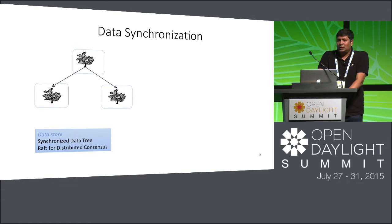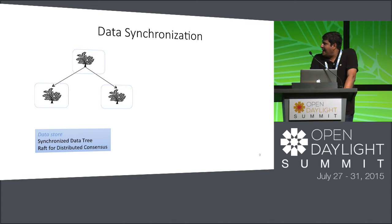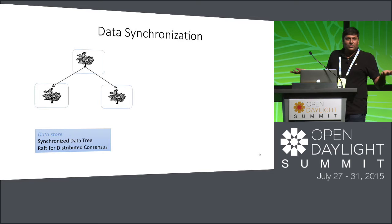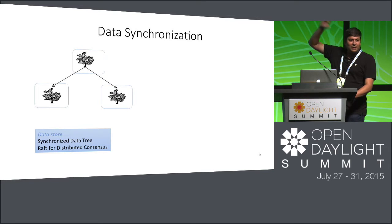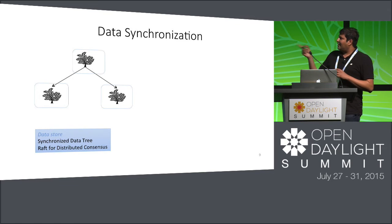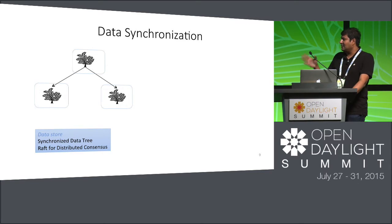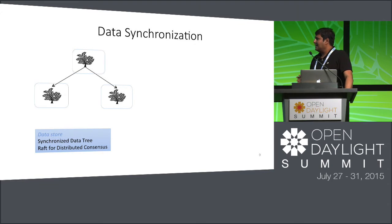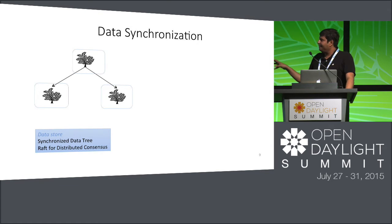Something common between the two implementations is data synchronization. For the data store, you have a big tree of data — inventory, topology, toaster, and so on — and you want that tree to be synchronized for high availability. We use an algorithm called Raft for consensus to make sure that all these trees look the same on each node. For RPC, we synchronize the RPC registry. That registry is replicated using a gossip-based implementation rather than Raft.